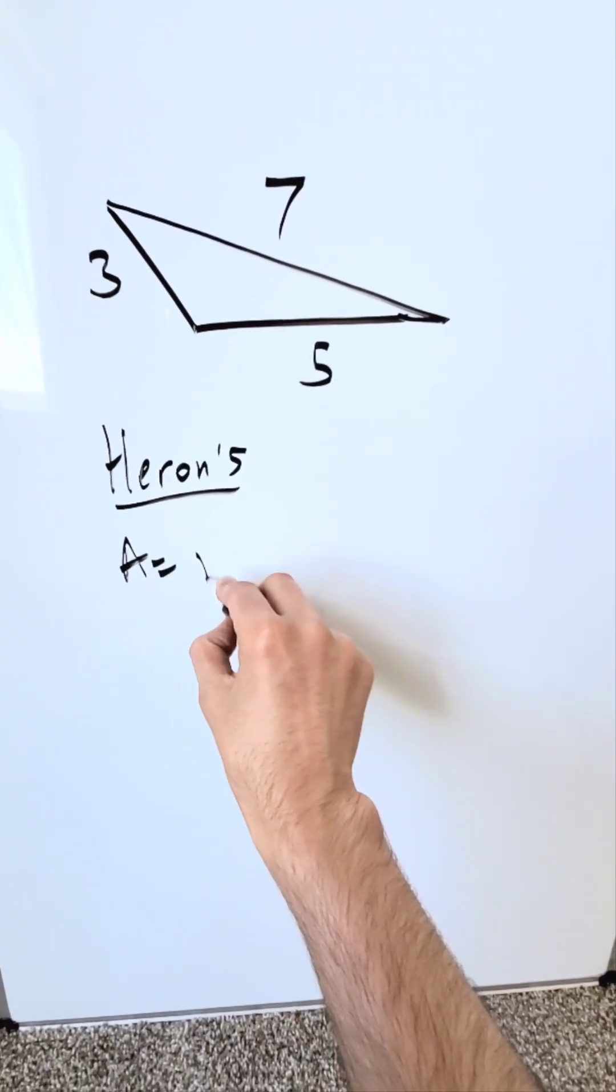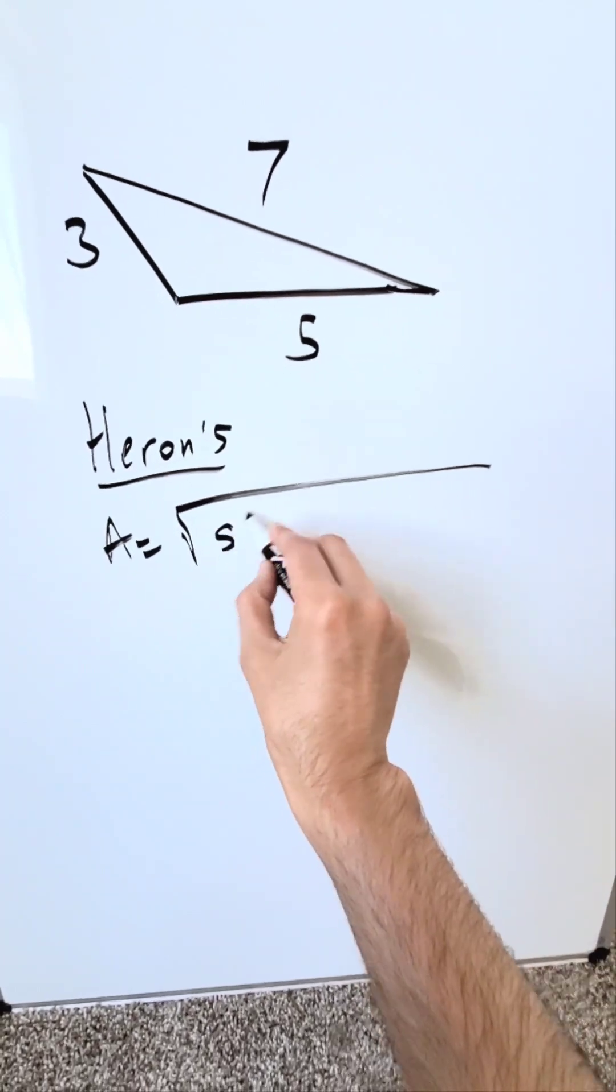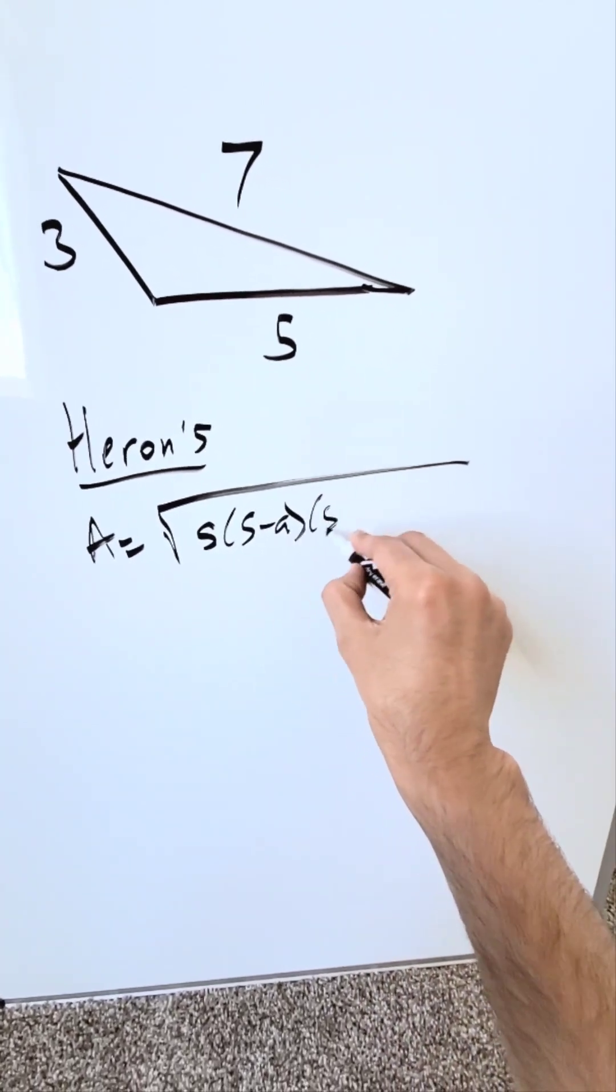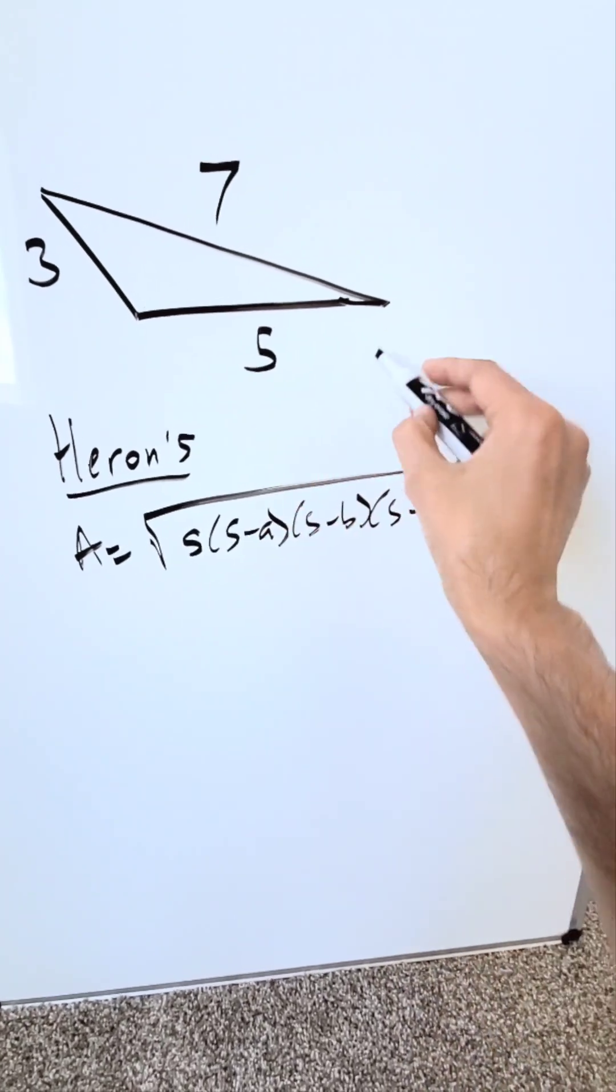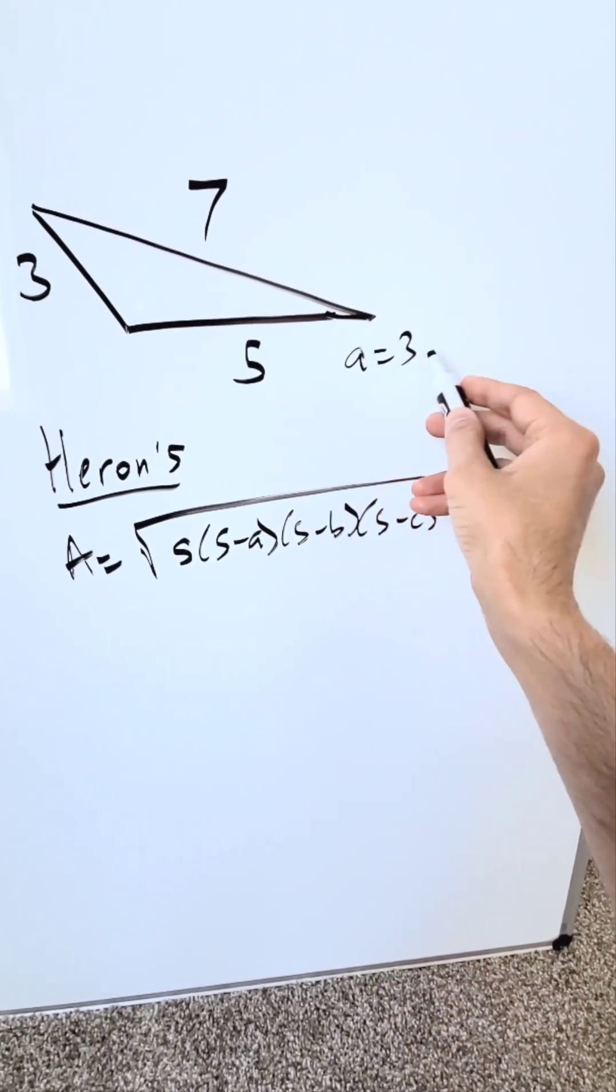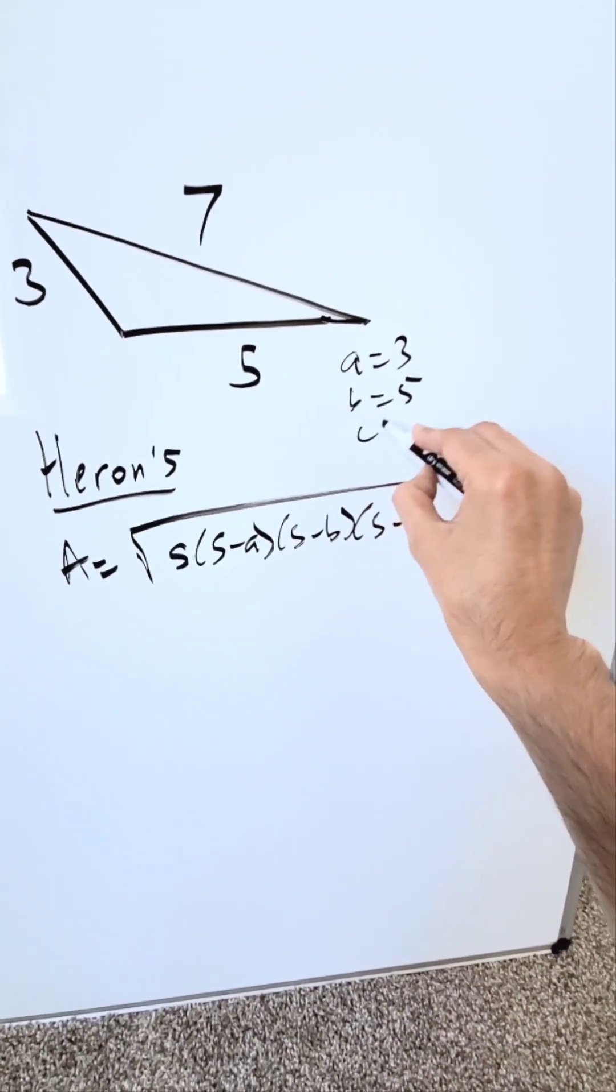The area is equal to this product here in a square root: s times s minus a times s minus b times s minus c. What's a, b, and c? Those will be your sides. Let here a equal 3, b equal 5, and c equal 7.